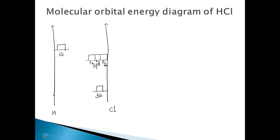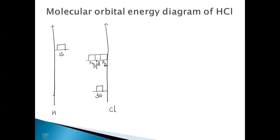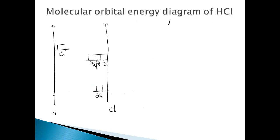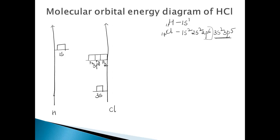When you draw the molecular orbital energy diagram of HCl, for hydrogen the electronic configuration is 1s1 since there is only one electron. For chlorine, it is 1s2, 2s2, 2p6, 3s2, and 3p5. I am showing only the valence electrons here — not the inner electrons — so 3s and 3p for the diagram, because these are the only ones involved in the bonding.